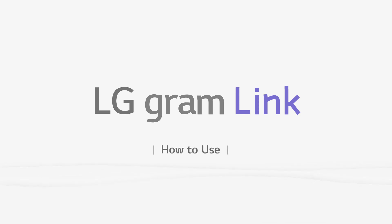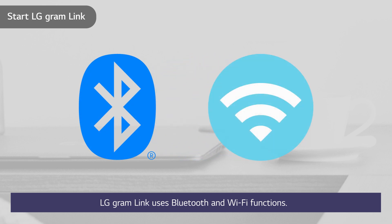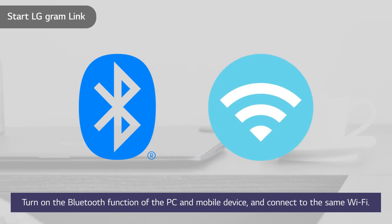How to use LG Gramlink. LG Gramlink uses Bluetooth and Wi-Fi functions. Turn on the Bluetooth function of the PC and mobile device and connect to the same Wi-Fi.